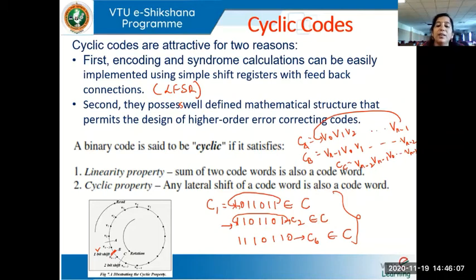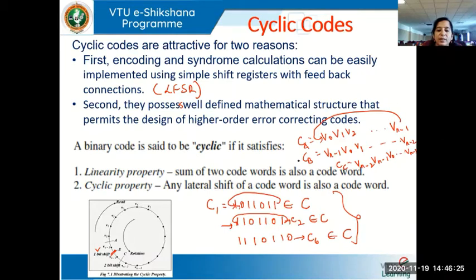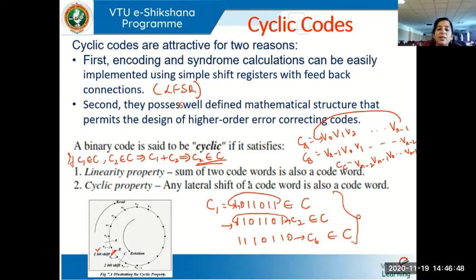A binary cyclic code normally satisfies two properties. The first is the linearity property — the sum of two codewords should also be a codeword belonging to the same code. So if c1 and c2 both belong to C, then c1 plus c2 should result in some cx which also belongs to C. The second is the cyclic property: any lateral (cyclic) shift of a codeword is also a codeword — a bitwise shift either to the right or left.